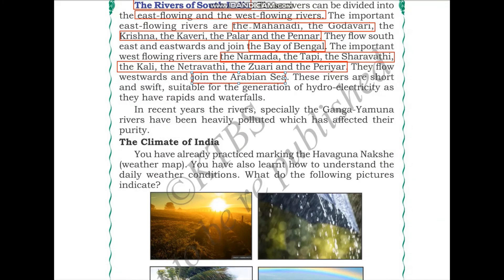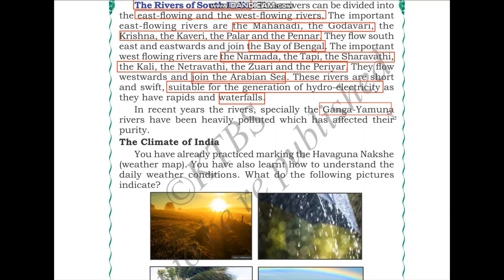The rivers of South India are short and swift, suitable for the generation of hydroelectricity as they have rapids and waterfalls. In recent years, the rivers — especially the Ganga and Yamuna — have been heavily polluted, which has affected their purity. We have talked about the Clean Ganga project in one of our previous videos; a link will be available in the description box.